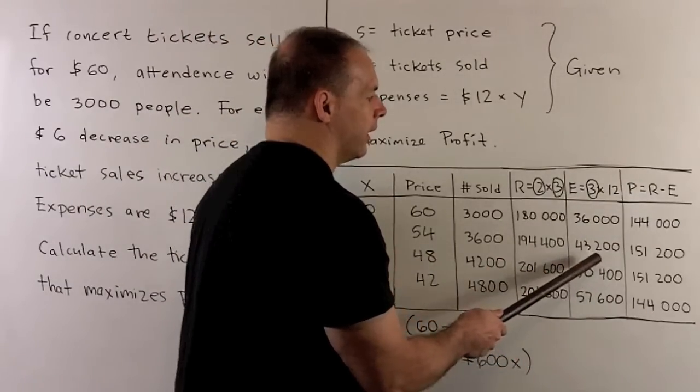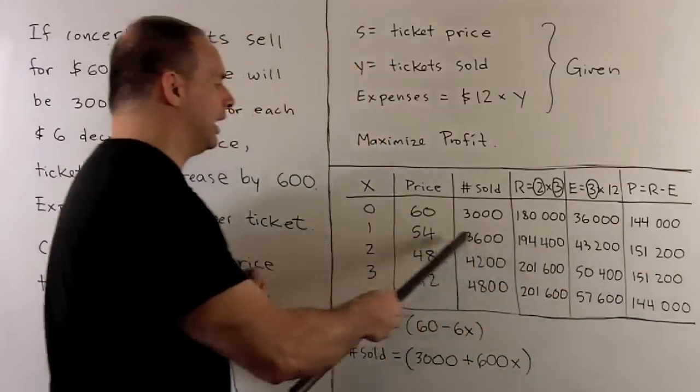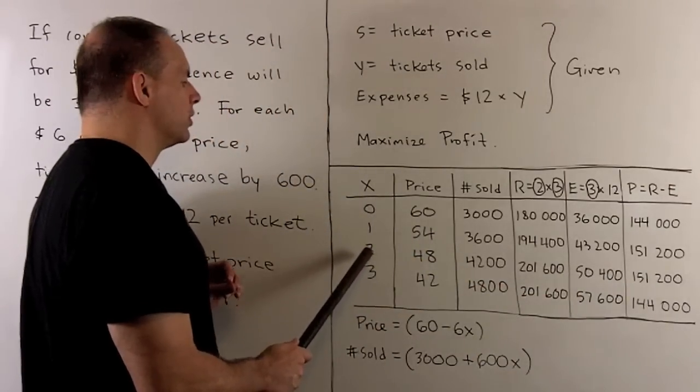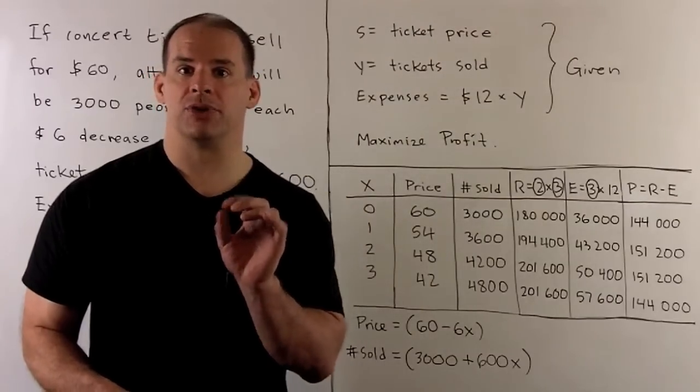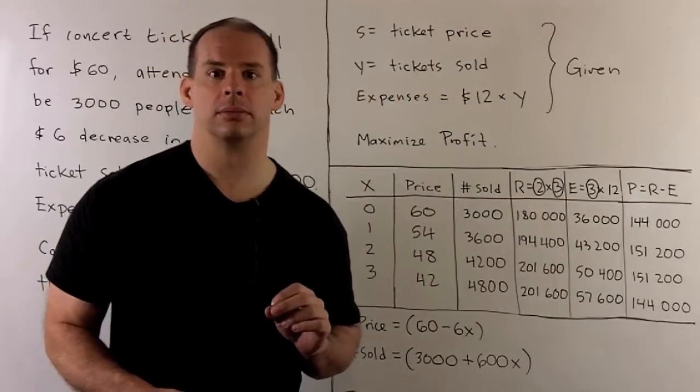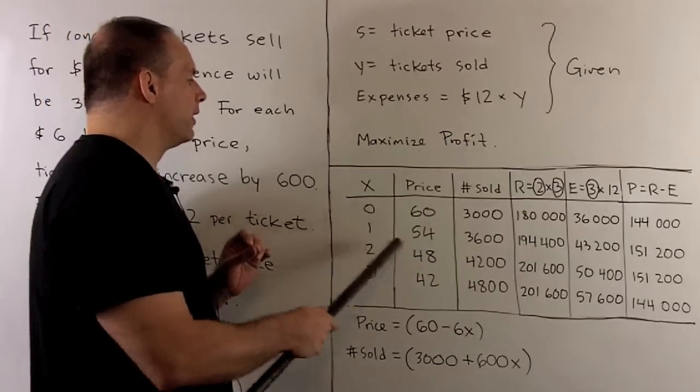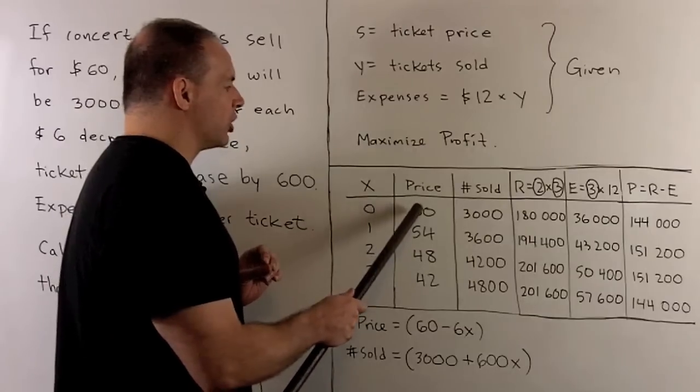One thing we'll note: these numbers are symmetric. So I'm expecting the ticket price that maximizes profit to be between increments 1 and 2. If we take the average of these two, we're expecting it to be $51. So that'll be our check in our work.